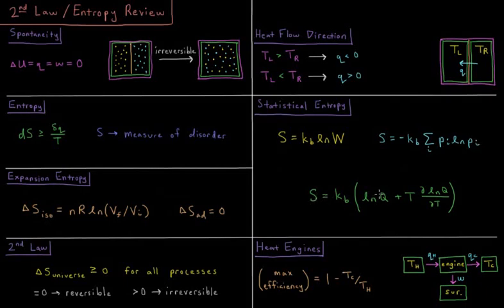And if we have the partition function in some algebraic form, it's equal to Boltzmann constant times natural log of partition function plus T times partial derivative of that natural log with respect to T.